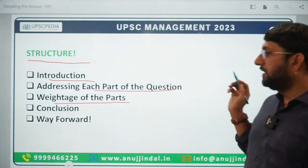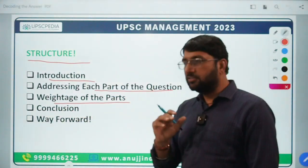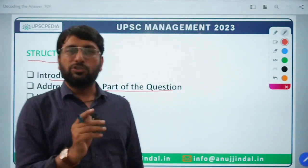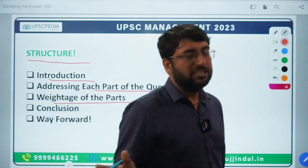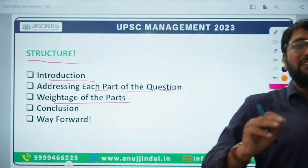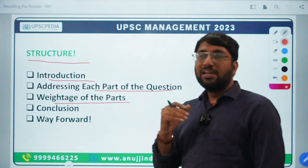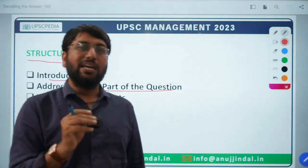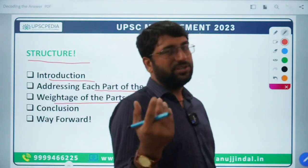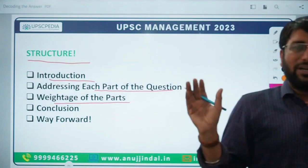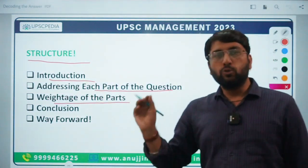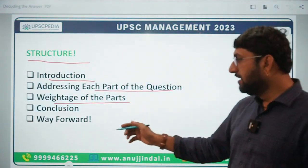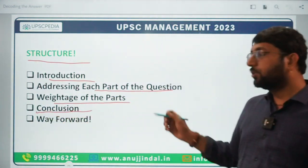The third part is the weightage of the parts. Many times the breakage is written — say a 15-mark question may have parts of 5+5+5. Sometimes the parts are not mentioned and you have to use your own discretion to allot weightage. And accordingly you have to write your answer. Because if a question is asked and it says 'list the points' or 'list 5 pointers', if you start explaining them in detail you won't get marks. So you have to give the appropriate weightage.